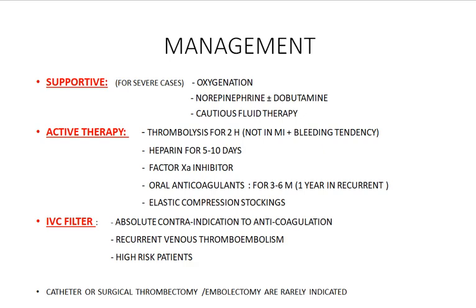After ending the phase of heparin or anti-Xa treatment, you may resort to long-term treatment by oral anticoagulants like coumarins. Use them for at least three to six months; you may increase this to one year in massive cases of DVT affecting proximal veins, in cases presenting with pulmonary embolism, and in recurring cases. In high-risk patients, oral anticoagulants may be used indefinitely for life. Please don't forget to use elastic compression stockings for the lower limbs.